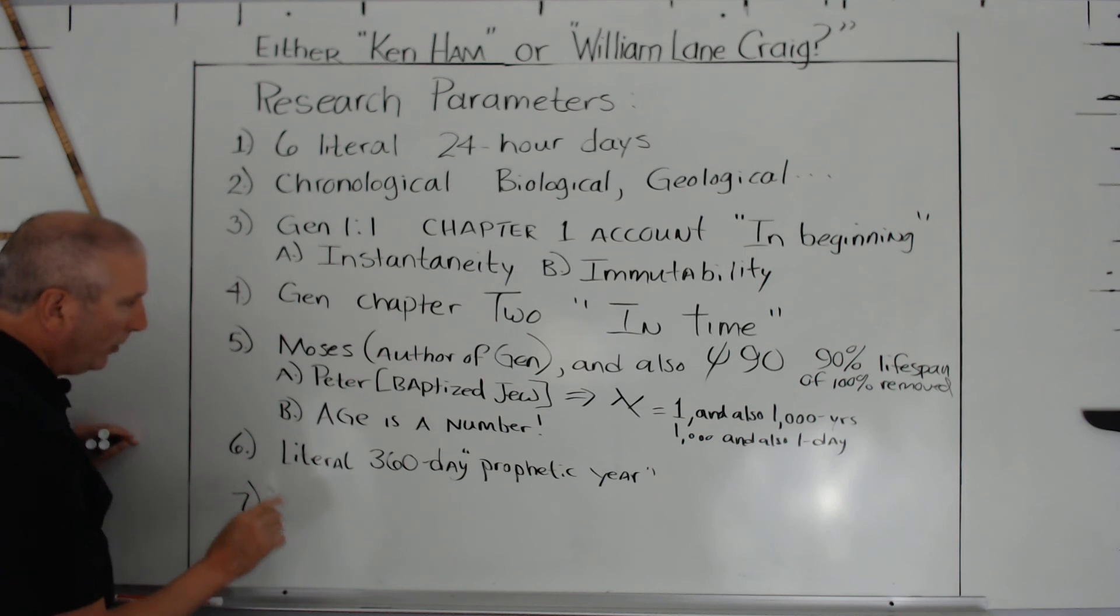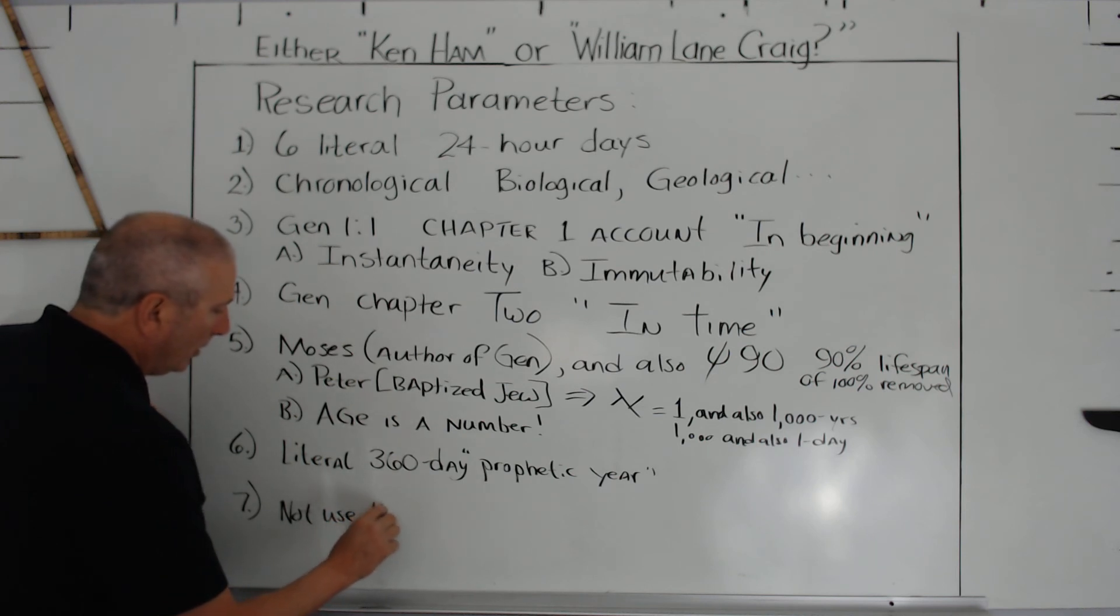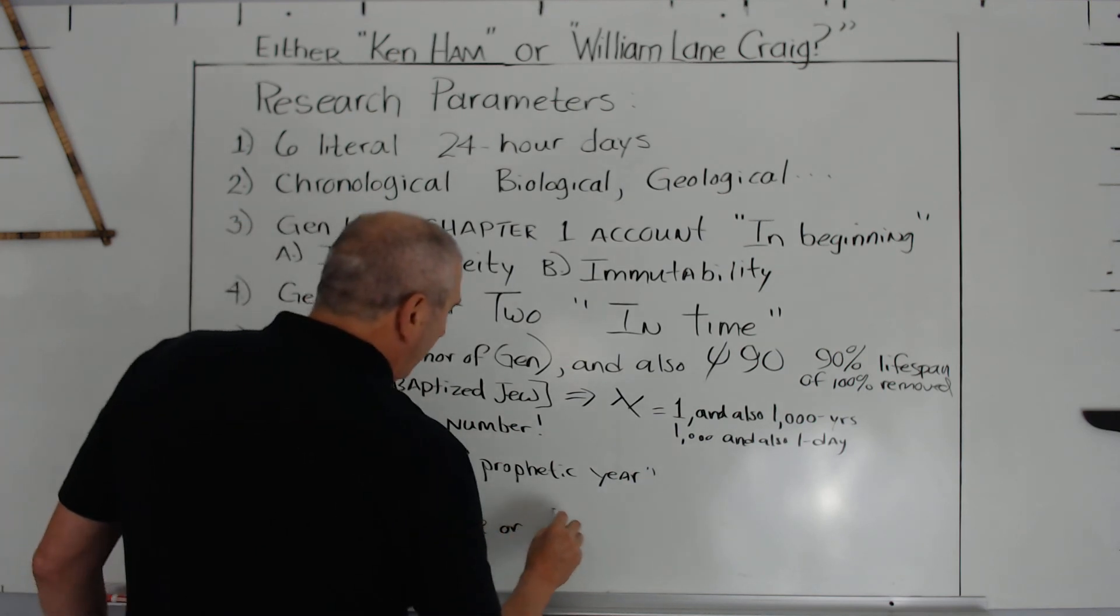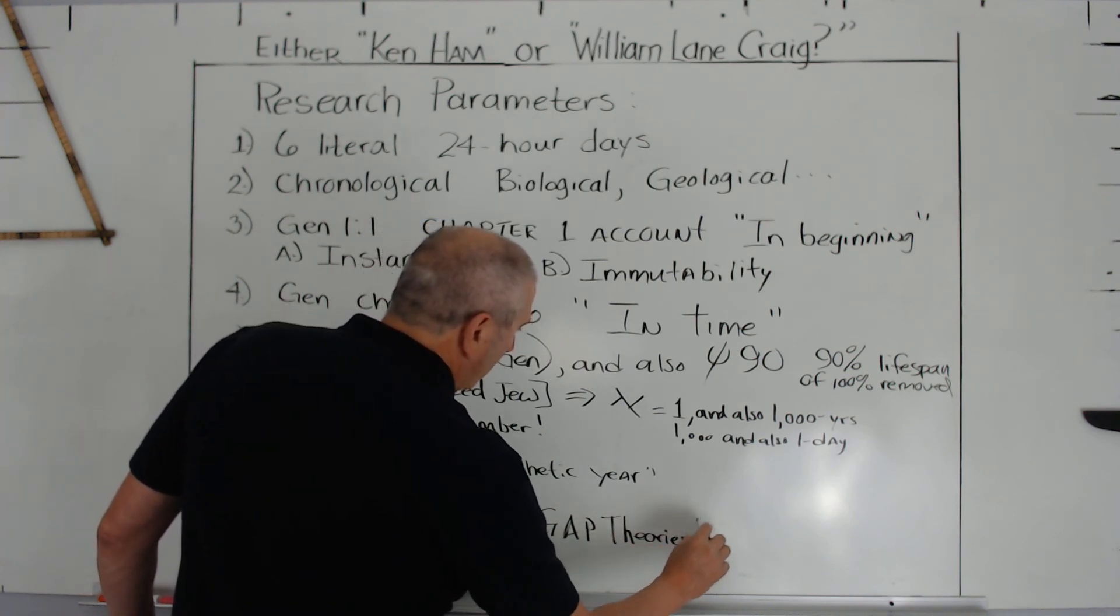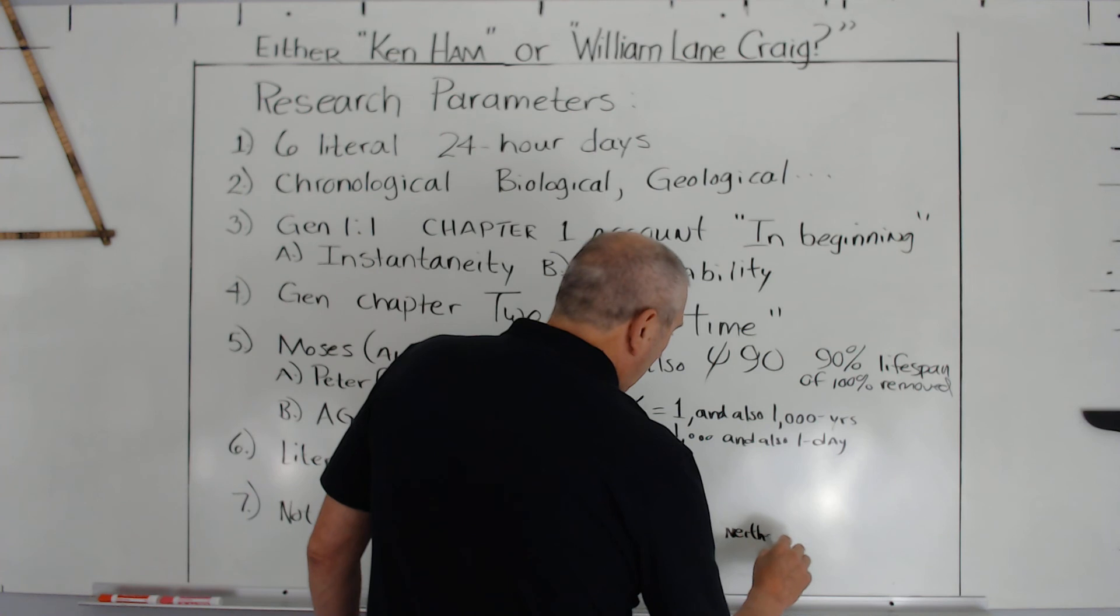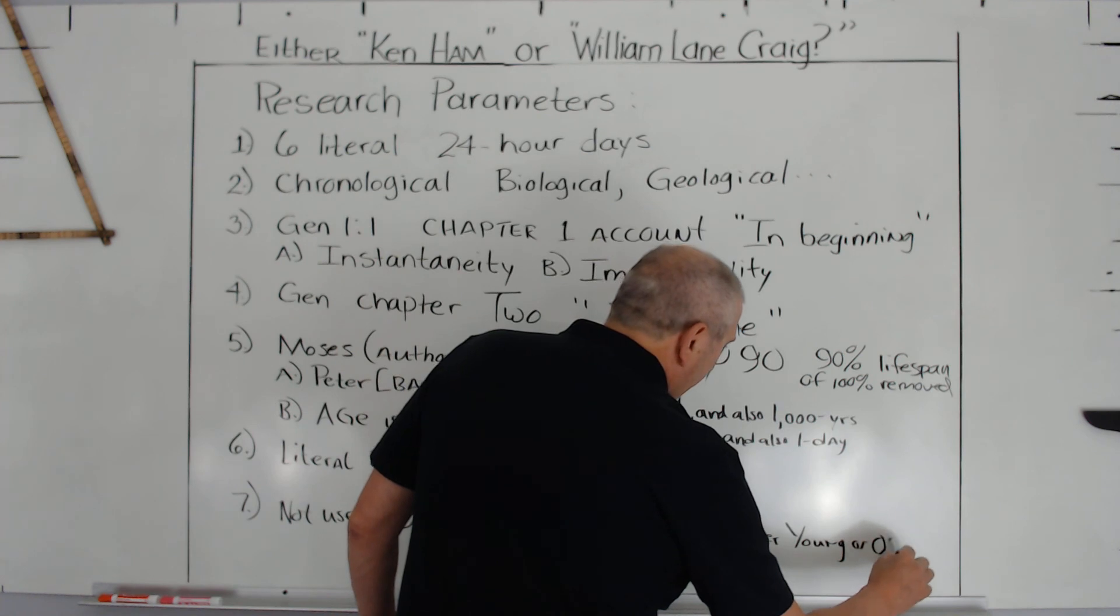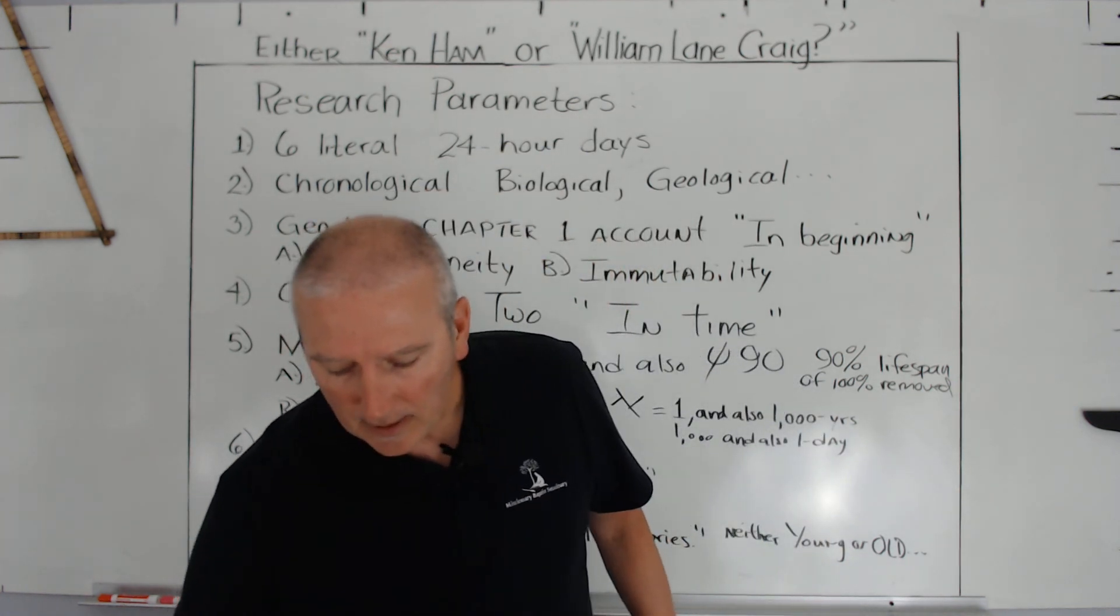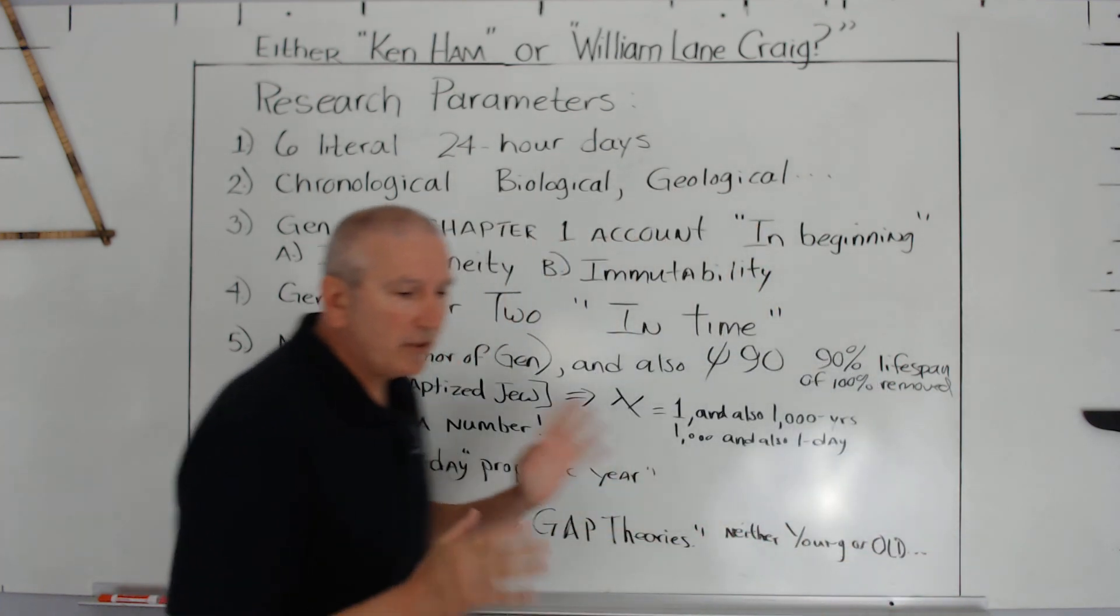And then number 7, let's say we will not use day age or pre-established gap theories. If that's true, then we will be neither young or old earthers. Well, now that really tightens our parameters. It drives us, focuses us to the text. You're noticing the text now and many other occasions we've covered this. If you've never studied it before, these are our research parameters. This is what we would do before we even introduce ourselves to this conversation.